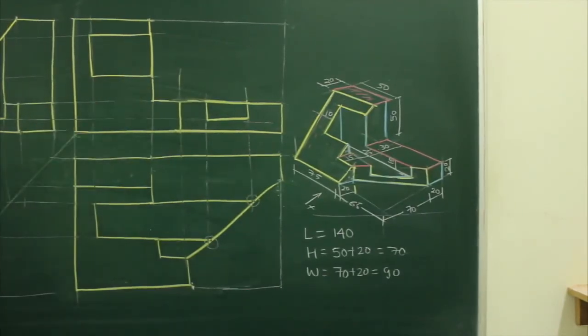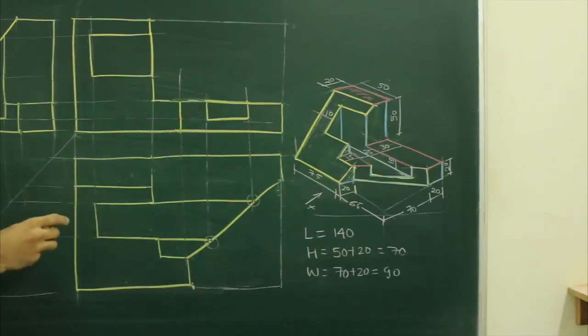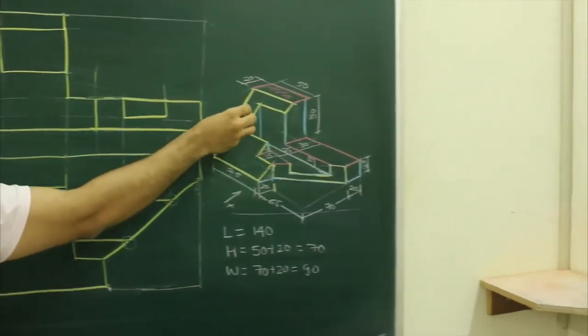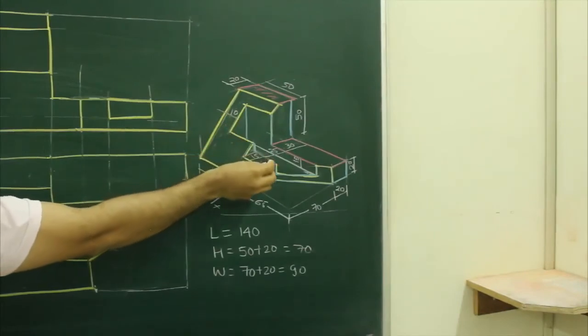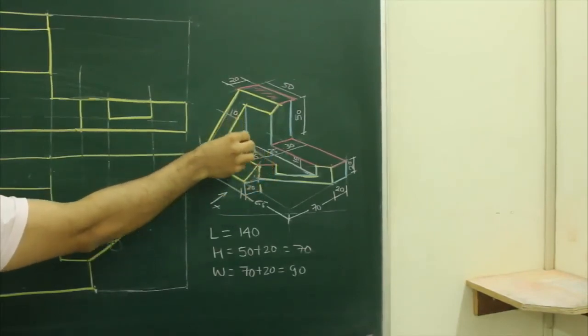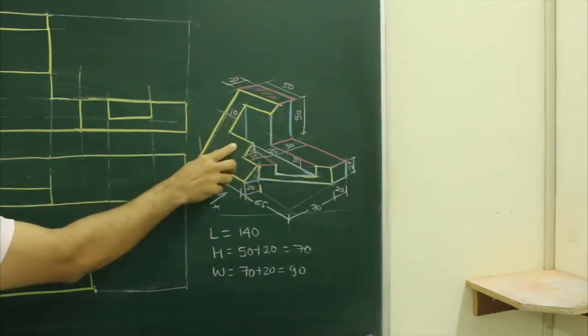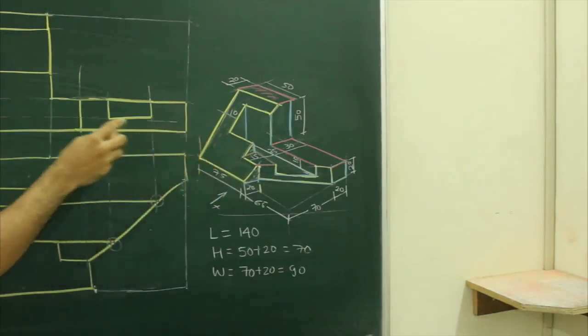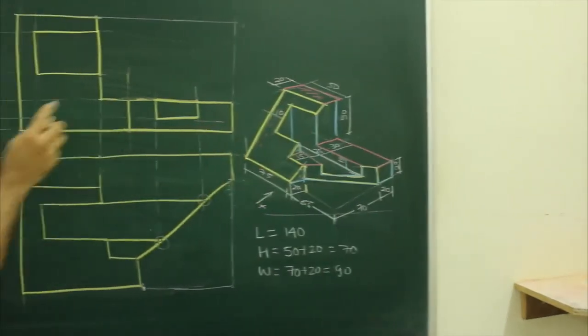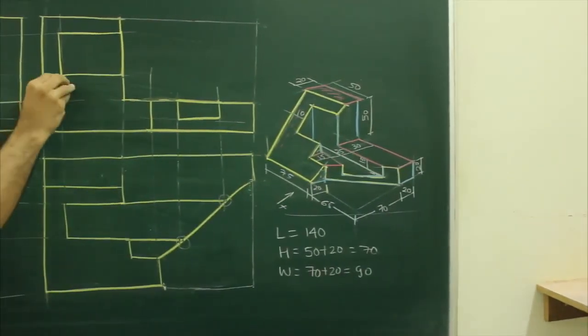Now we have to draw a dotted line. For dotted line, if you see from front view, this line which is going down, it is merging with this line, but this intersection we cannot see because of this block. So what we need to do, we need to draw dotted line for that much portion.